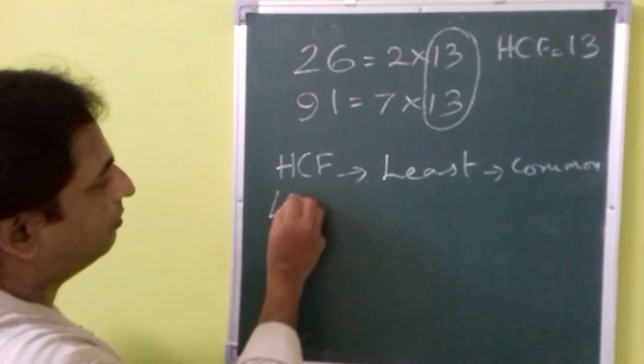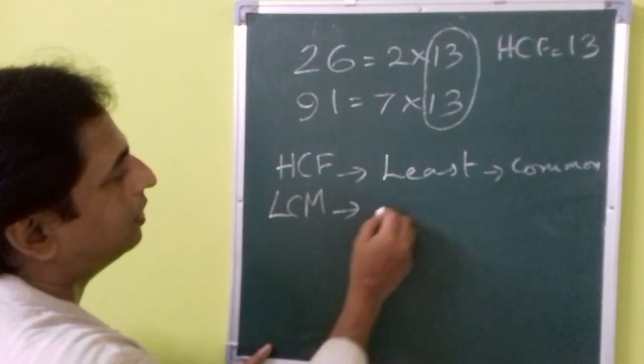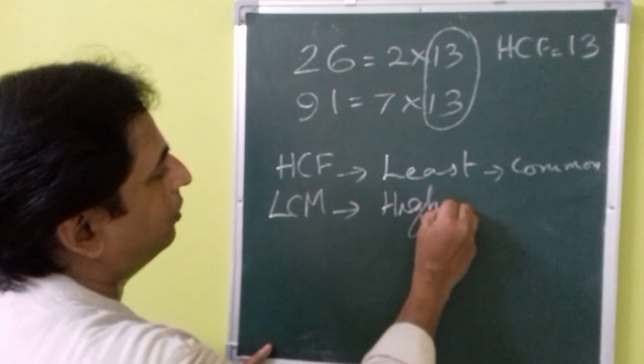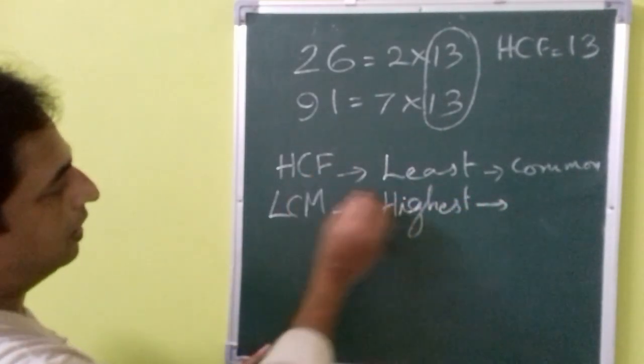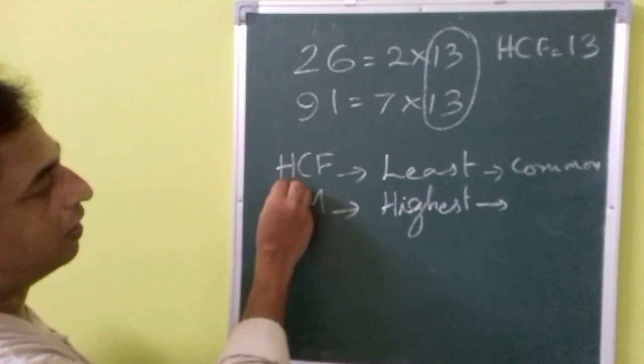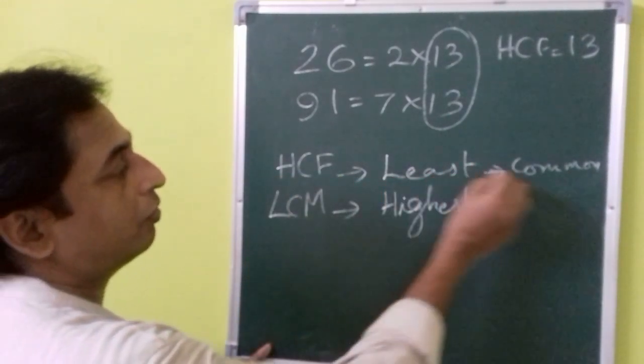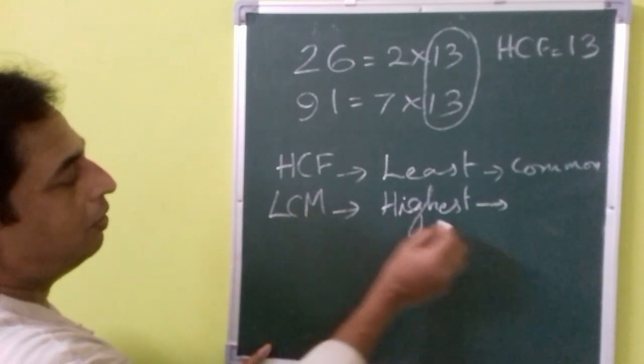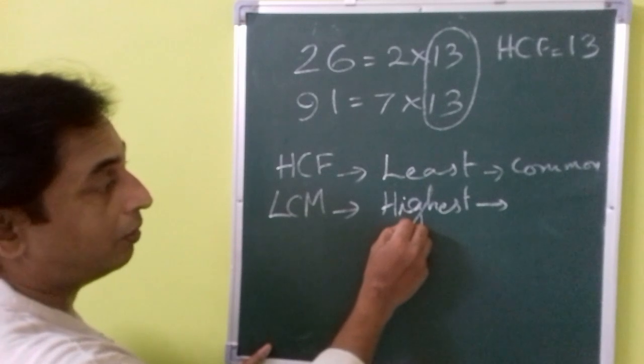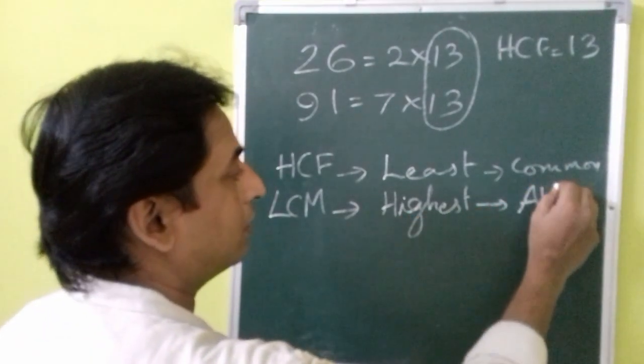And for LCM, you need to find the highest power. You notice the contrast. When you are taking the highest common factor, we are taking the least power of common factors. When you are taking the least common multiple, we are taking the highest power of all factors.